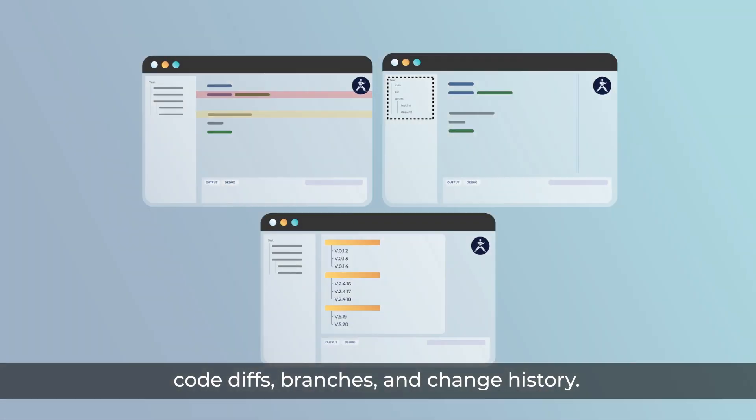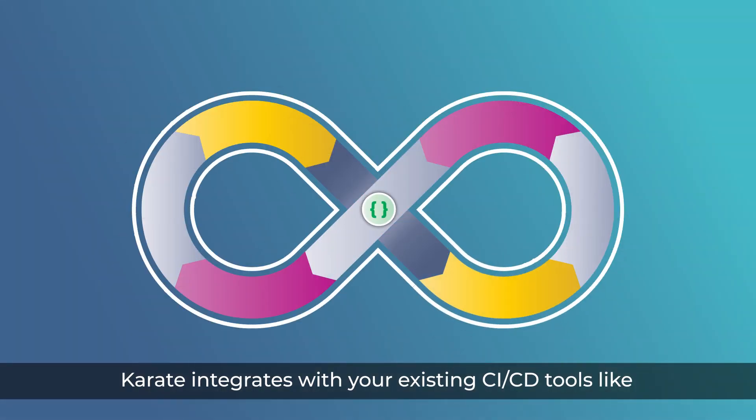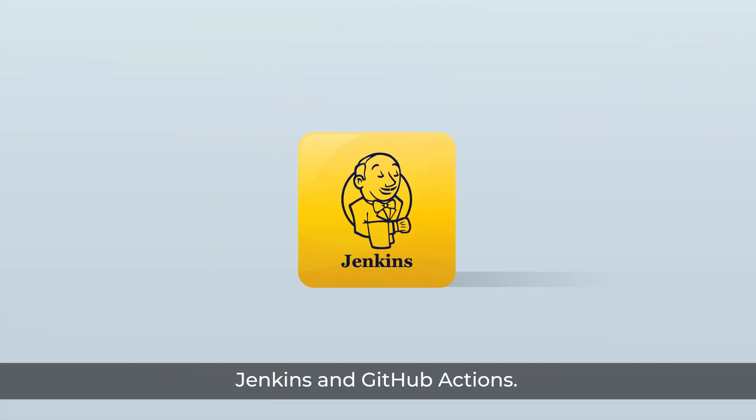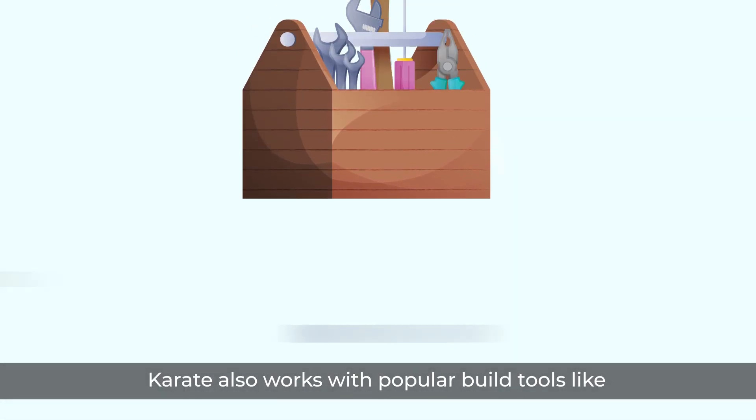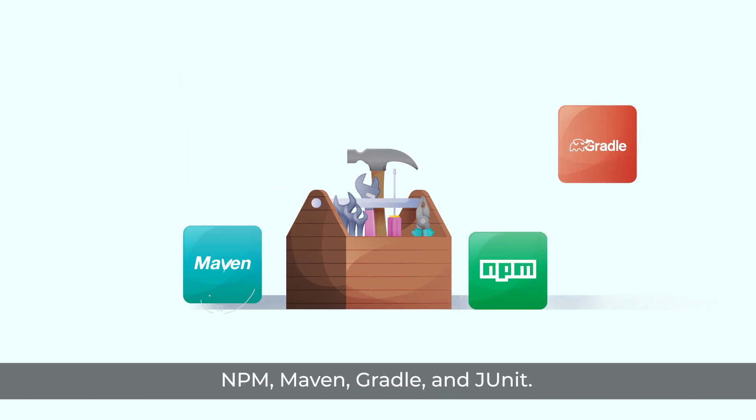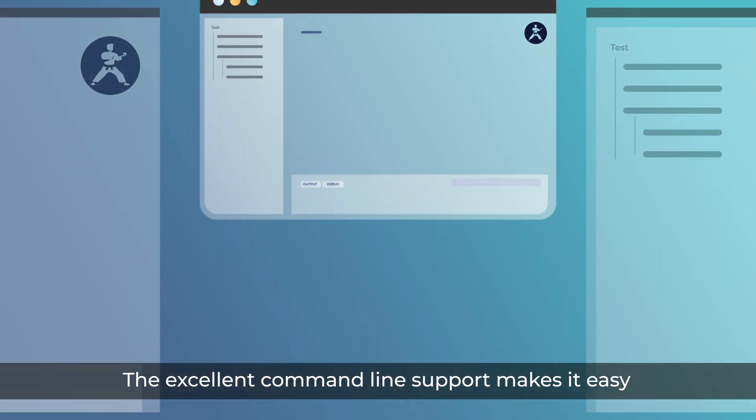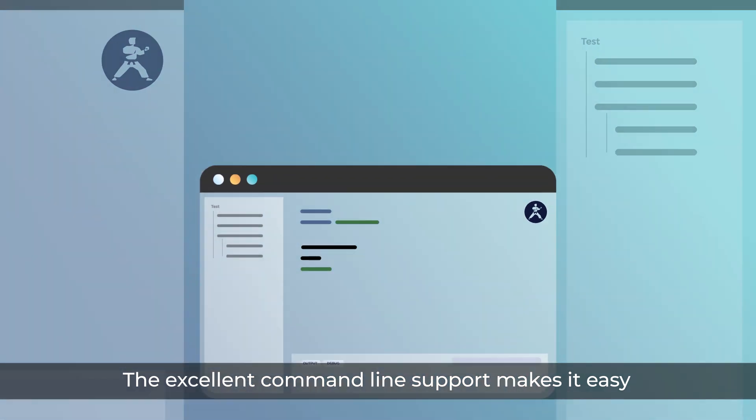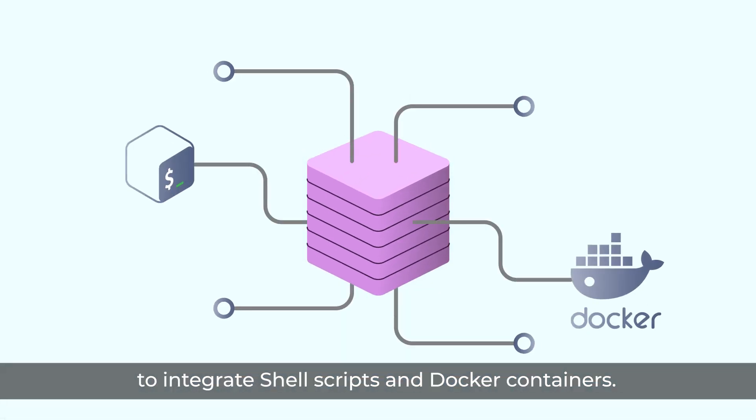Karate integrates with your existing CI/CD tools like Jenkins and GitHub Actions. Karate also works with popular build tools like NPM, Maven, Gradle and JUnit. The excellent command line support makes it easy to integrate shell scripts and Docker containers.